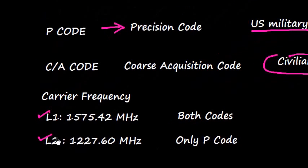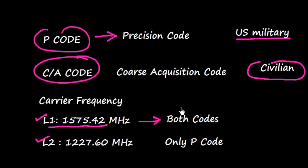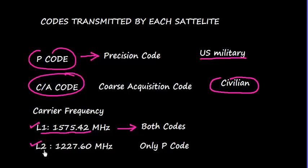The carrier frequencies are L1 and L2. L1 is 1575.42 MHz and is used with both codes, that means P-code and CA-code. Both codes use the L1 frequency. L2, which is 1227.60 MHz, uses only P-code. So the U.S. military uses this L2 frequency.